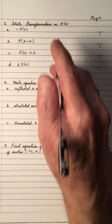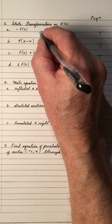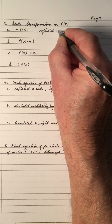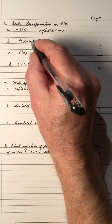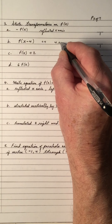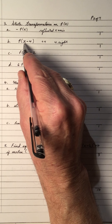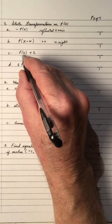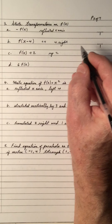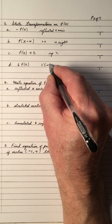Third question: state the transformations on f(x). A negative outside f(x) means it's reflected in the x-axis — the y becomes negative. Give yourself a mark. A plus 4 inside the brackets means a horizontal shift 4 units right (always the opposite). Adding 2 to f(x), which is the y-value, means shifted up 2. Give yourself marks for each correct transformation identified.